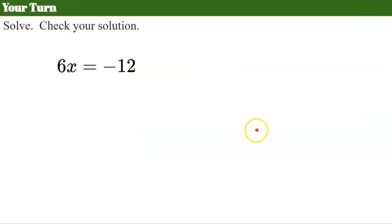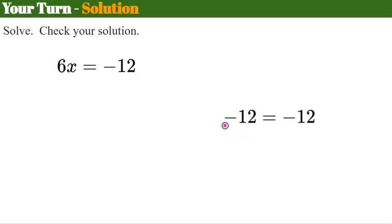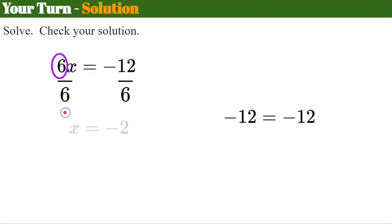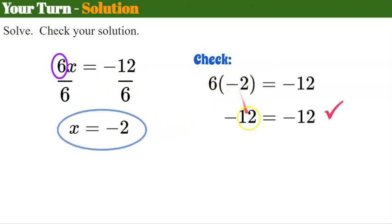Your turn. Pause, solve, check your solution, and come back. Welcome back. Here x is being multiplied by 6. The inverse of multiply by 6 is to divide by 6. Divide the other side by 6 as well. 6 divided by 6 is 1, and negative 12 divided by 6 is negative 2. Checking: 6 times negative 2 is negative 12 — it checks. Our solution is x equals negative 2.